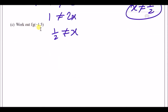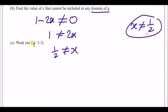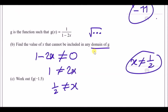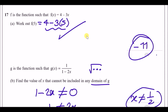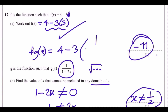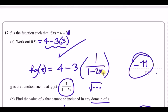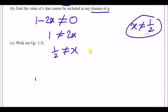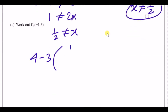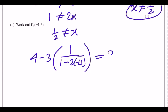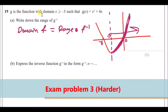Work out f(g(−1.5)). This means we plug g into f — g goes inside f. Replace the x in f with the g function: f(g(x)) = 4 − 3 × (1/(1 − 2x)). Now replace x with −1.5: the answer is 4 − 3 × (1/(1 − 2 × −1.5)). Putting this in the calculator gives 3.25.